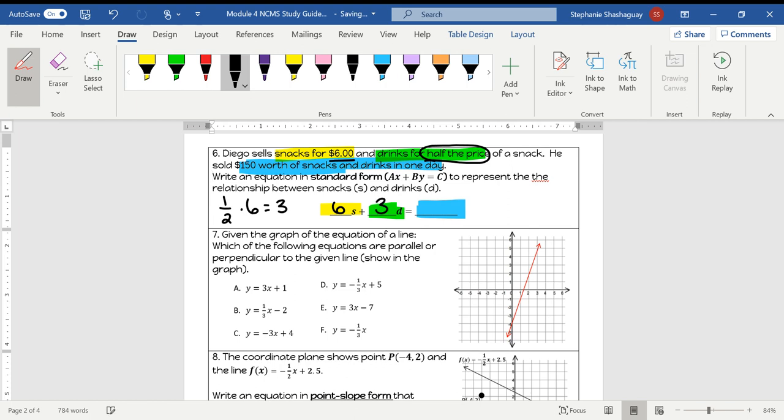That means 6S plus 3D is equal to the $150 that they sold. Simple as that.